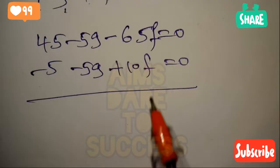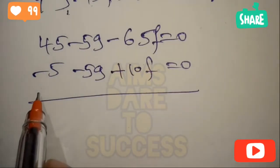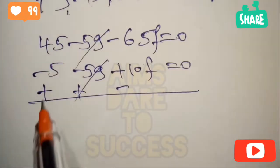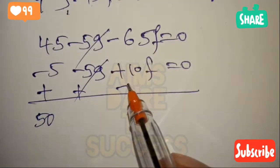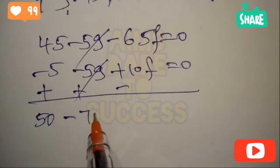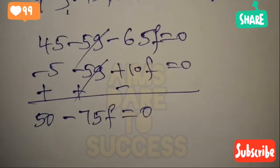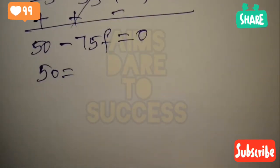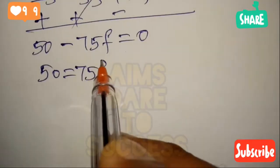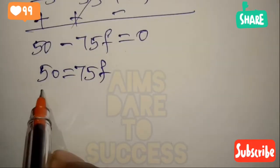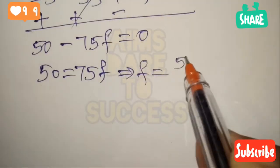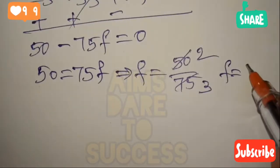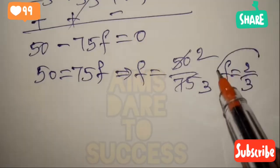Subtracting equation 7 from the multiplied equation 8: -5g cancels. 45 + 5 = 50, and -65f - 10f = -75f, giving 50 - 75f = 0. Therefore 75f = 50, so f = 50/75 = 2/3.